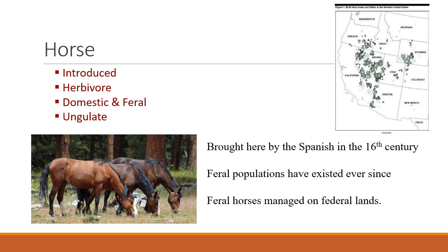Horses were also introduced to North America. They're herbivores and ungulates. There was a native species of horse that became extinct long before Western humans came here. The Spanish brought horses in the 16th century, and some of those horses became feral. So some are still domestic, and some became feral and have existed ever since. The feral horses are managed on federal land in designated horse management areas.